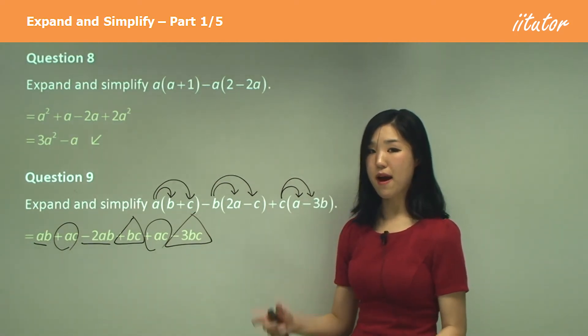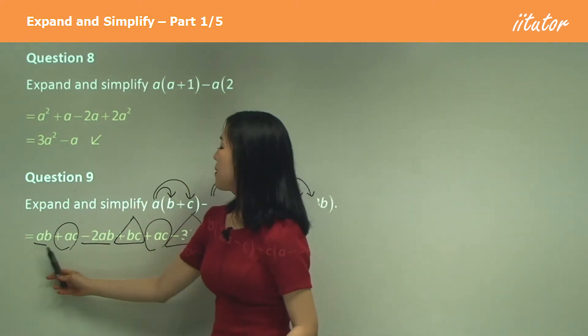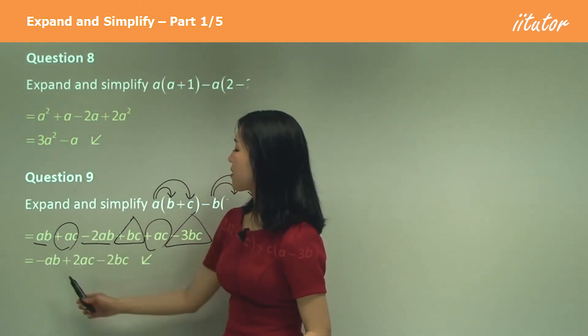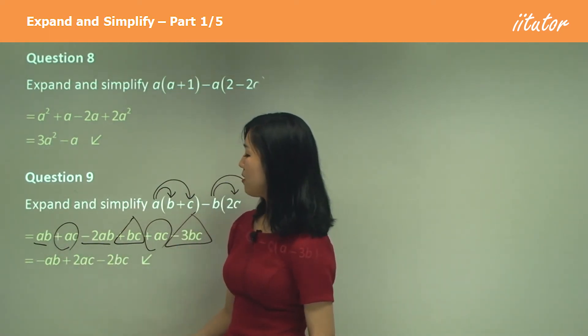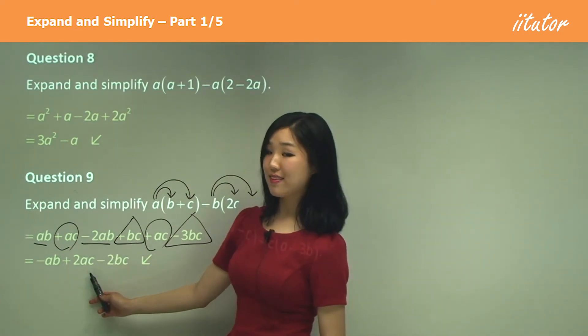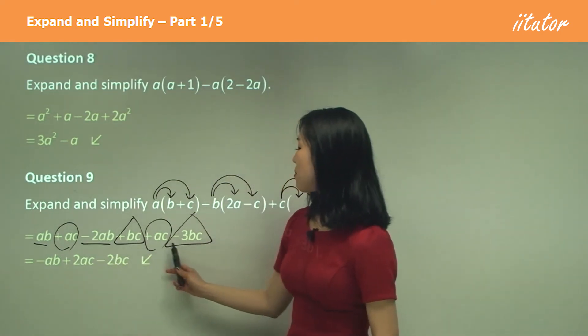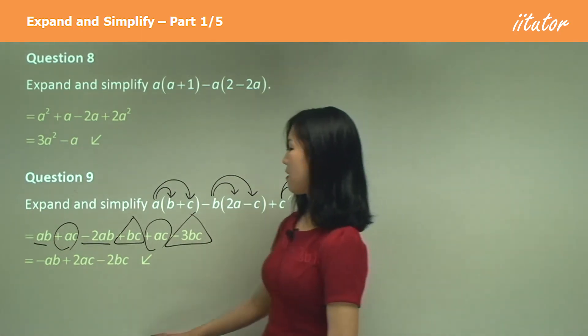Okay so let's go ahead and gather them up by adding or subtracting our coefficients. So ab and minus 2ab, that's going to be minus ab. Now ac plus ac is 2ac and bc minus 3bc is minus 2bc. Easy? Very.